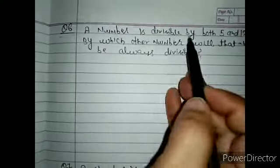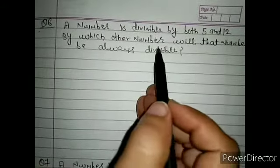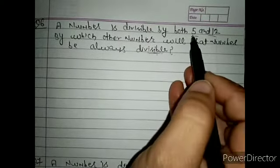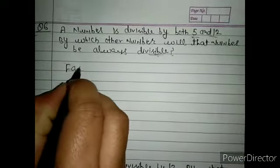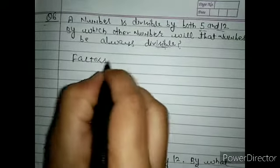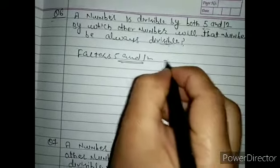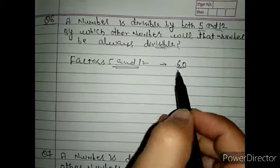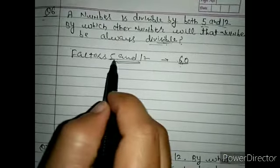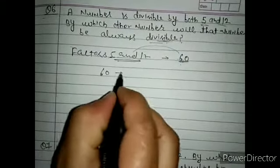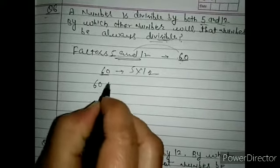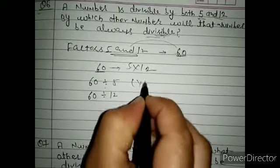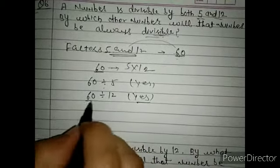Question 6: a number is divisible by both 5 and 12 — by which other number will it always be divisible? Multiply 5 and 12 to get 60. So the number is a multiple of 60, and 60 is divisible by 5 and 12. The answer is 60.